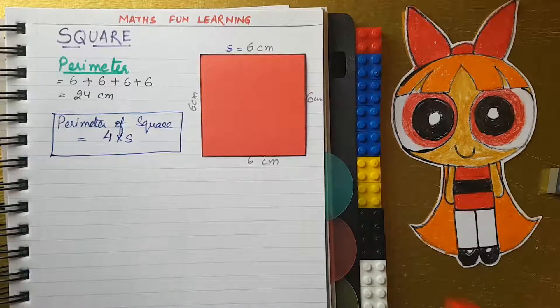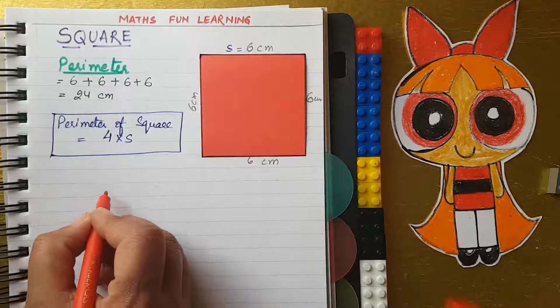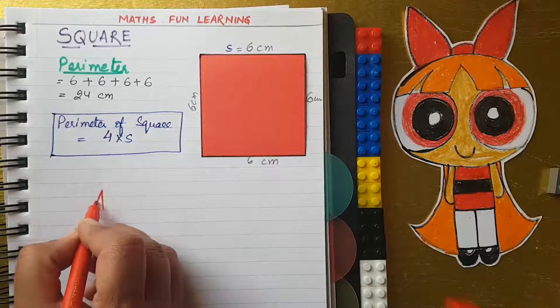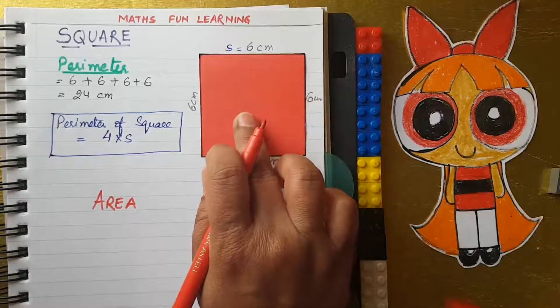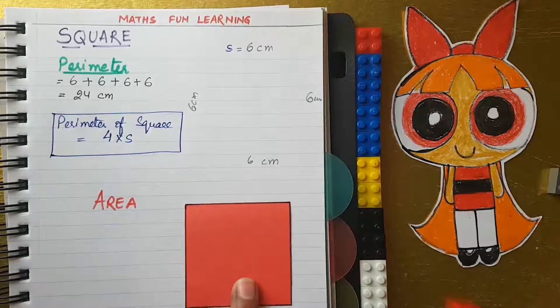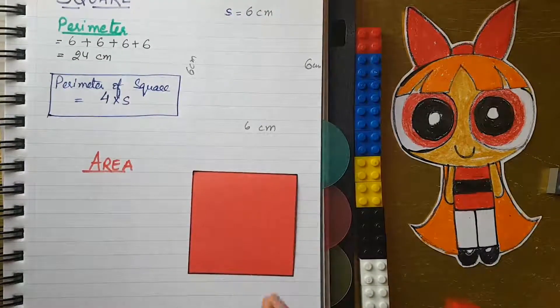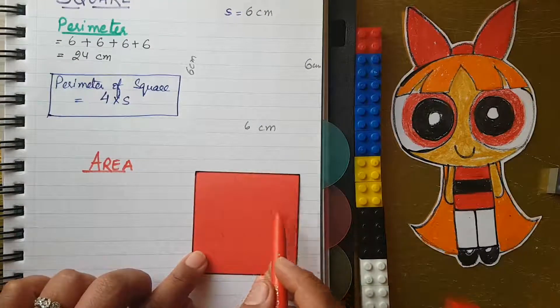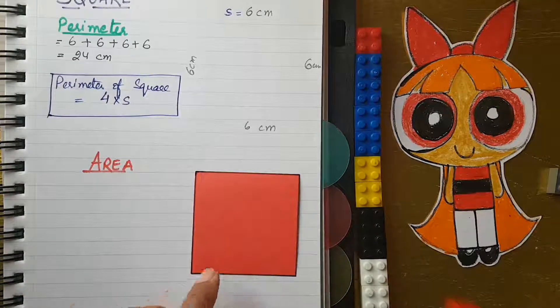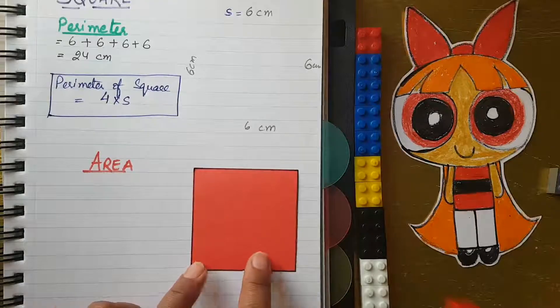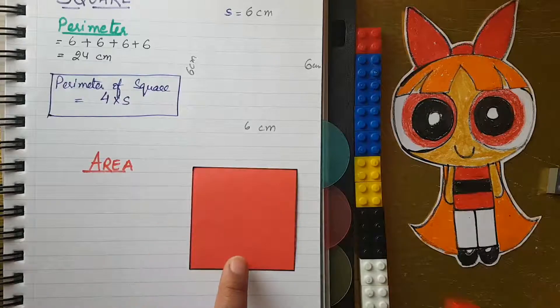Now let's work on area. What is that area? First you have to understand what area is. I will just bring this square here. Area means it's not a boundary. Perimeter is a boundary, but area is the inner full part.